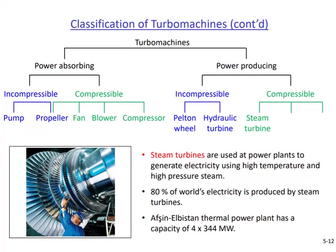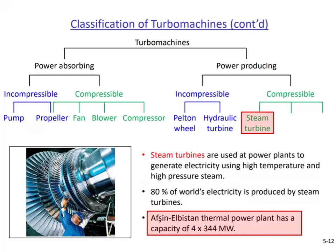The next turbo machine is the steam turbine. Steam turbines are very important because they produce about 80 percent of the world's electricity. The Afşin Elbistan thermal power plant in Turkey has four steam turbines each producing 344 megawatts of power. Steam turbines are large, complicated, and expensive machines — you can find several nice videos on the internet explaining their components and general working principle.